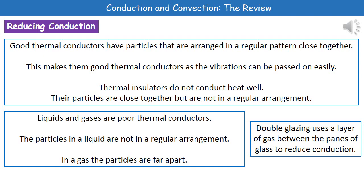We can apply that knowledge in our homes if we want to reduce conduction. If you think about double glazing, which lots of us have in our houses, we've got two panes of glass with a layer of gas between them. The heat is able to travel by conduction through the pane of glass, but then it hits that layer of air. Because air is not very good at conducting heat, it reduces the energy loss through conduction.